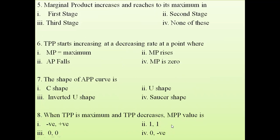The fifth question: Marginal product increases and reaches its maximum in which stage? The maximum point of the MPP curve is the inflection point, and the inflection point comes in the first stage as seen in the graph. So marginal product reaches its maximum in the first stage.